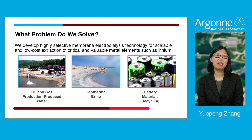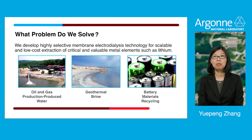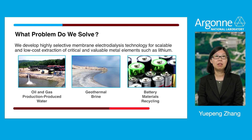Here we give a few examples of how we use our technologies. One example is to extract elements from produced water from hydraulic fractured oil and gas production wells, which contain a large variety of contaminants, such as salts like chlorine and sulfate, and metals like barium, manganese, iron, and strontium.